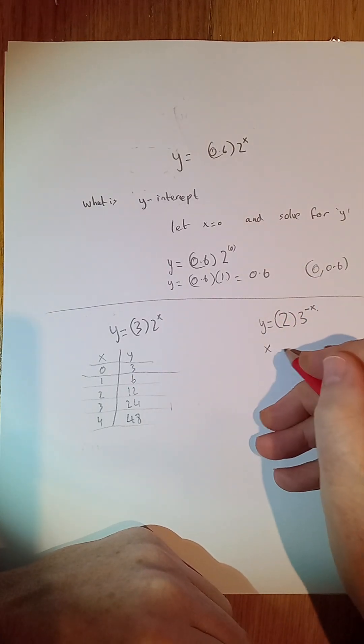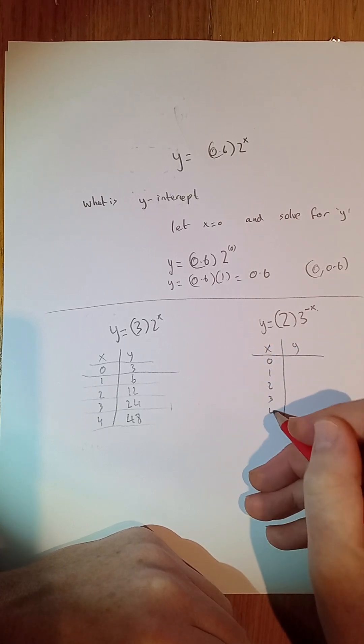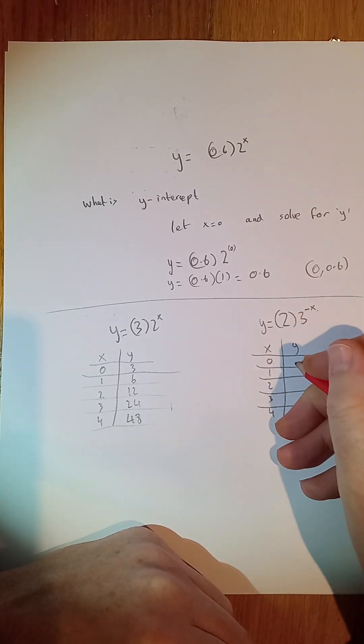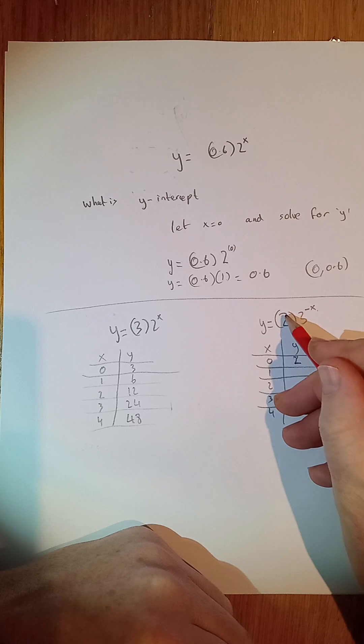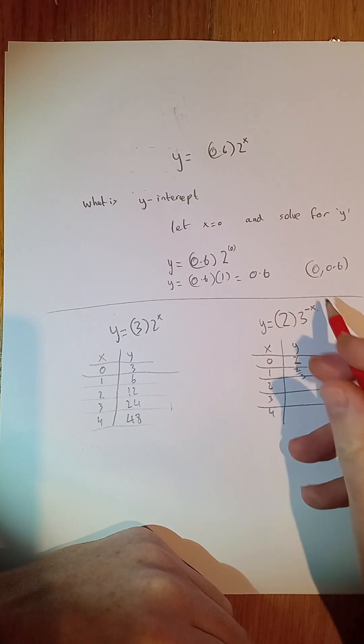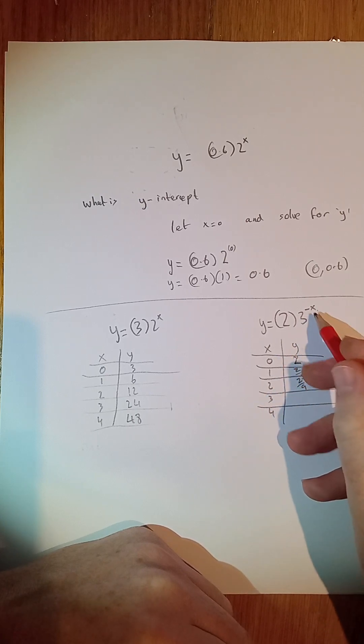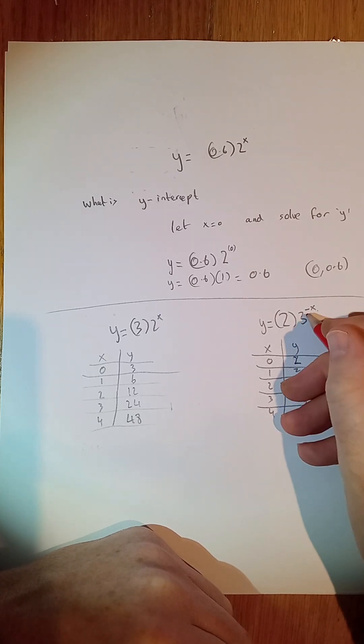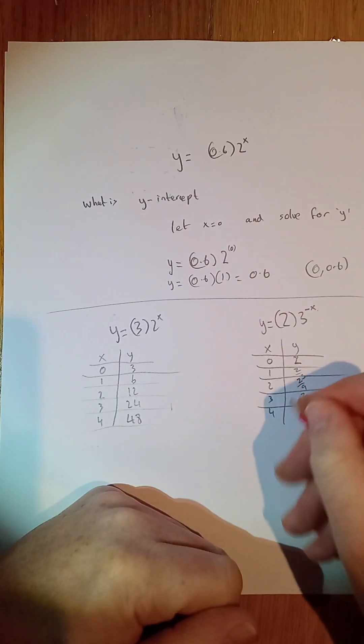Now, let's have a look at this one. We'll do the same thing here. We'll do our y and do our x. We'll do 0, 1, 2, 3, and 4. When x is 0, y is 2. When x is 1, that's really going to be 2 times 3 to the power of minus 1. That's 2 thirds. When x is 2, that's going to be 2 ninths. When x is 3, that's going to be 2 over 27. When x is 4, 3 to the 4 is 81. It's going to be 2 over 81.